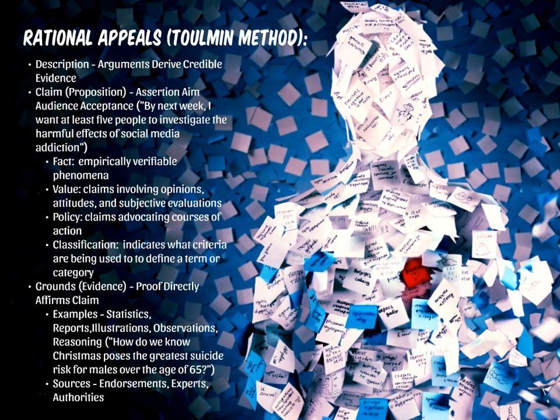Grounds. This is the evidence that you deploy, which will include examples, statistics, reports, illustrations, observations, and reasoning. Going back to rational appeals, notice that all of these things are information that the audience can look up for themselves and verify. And finally, sources — these will be endorsements, experts, and authorities that will help you establish credibility with your audience.